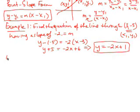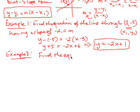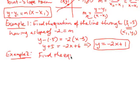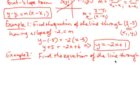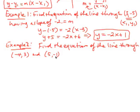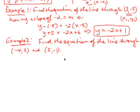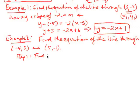The second example has to do with what happens if I have two points and not the slope. Find the equation of the line through the points (-4, 3) and (5, -1). In this case we don't have the slope, but we have two points so we can find it. Step 1: find the slope. We know m equals y₂ minus y₁ over x₂ minus x₁.